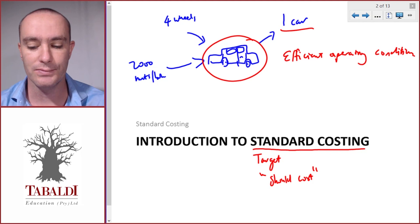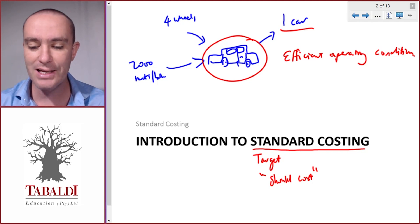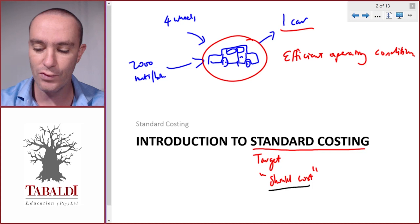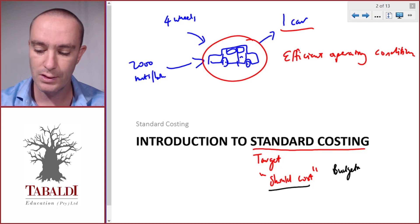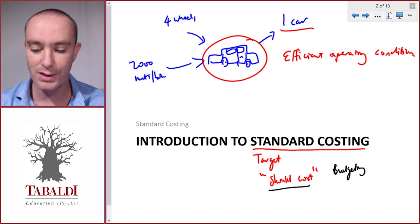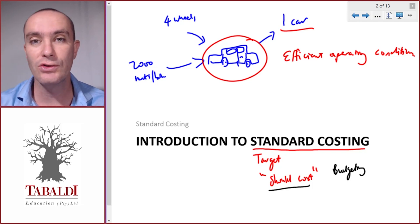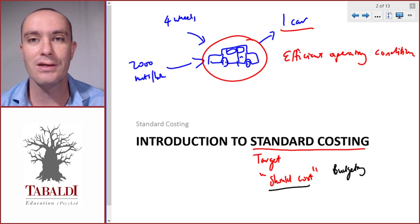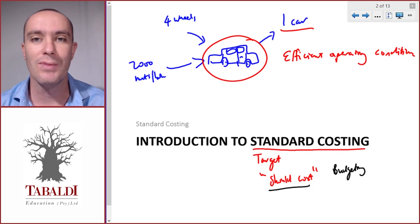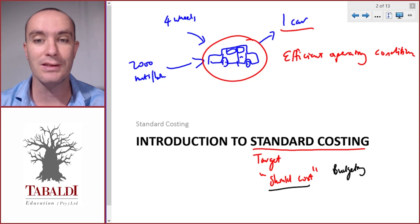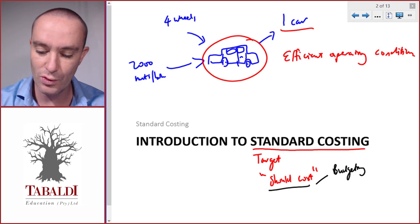Standard costing is used for budgeting. When we prepare a budget, we say: if we make 100 cars and it should cost us 50,000 to make a car, we multiply 50,000 by 100 and that is our budgeted cost.